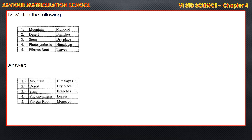Fourth: Photosynthesis — the correct answer is leaves. And the fifth one: Fibrous root — the answer is monocot.